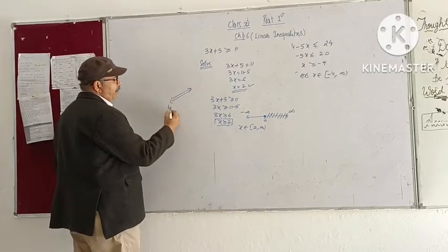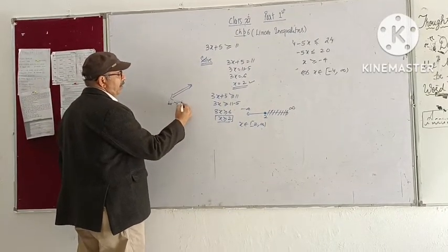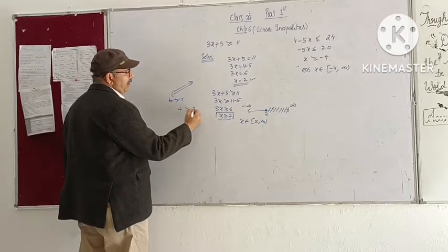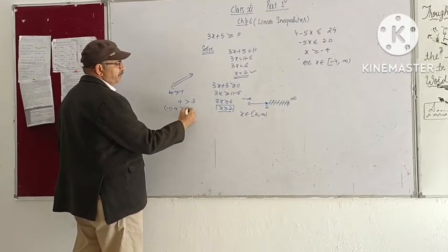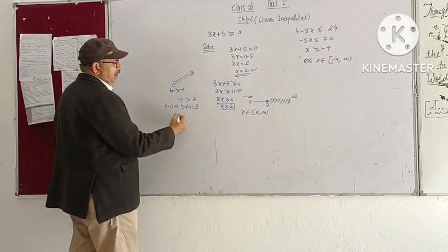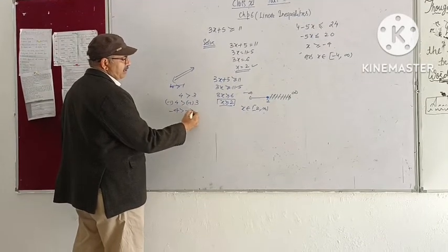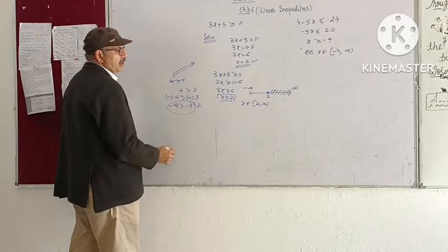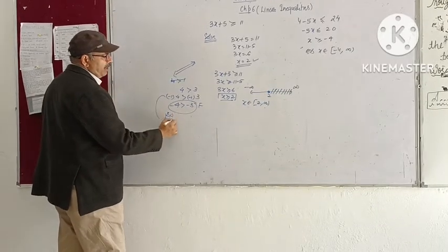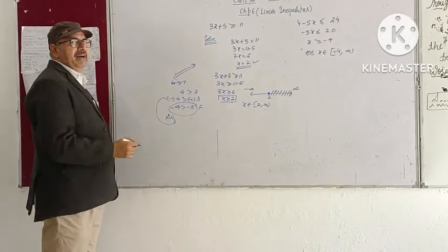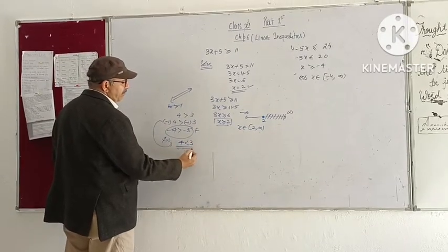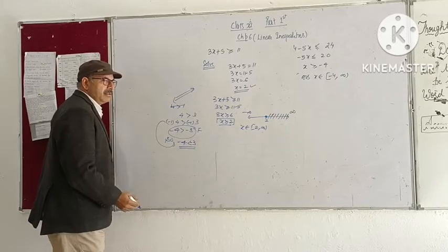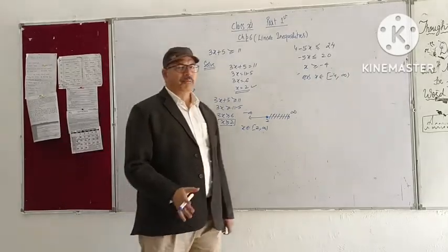So if I will take this 4, then minus 5x is greater than or equal to... then minus 4 is greater than minus 3, this is false. So from here when we multiply or divide by minus, we have to change the sign. Okay, I hope you got it.